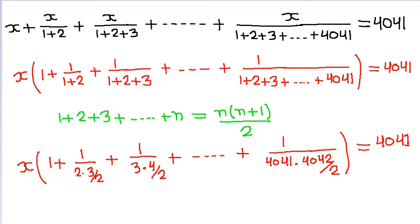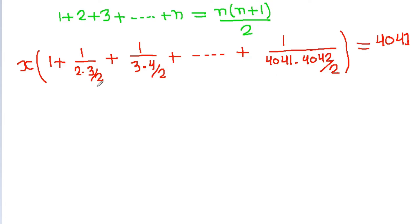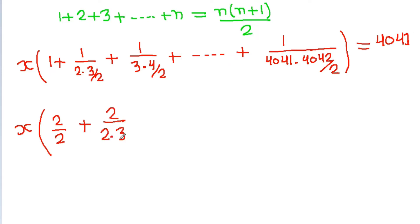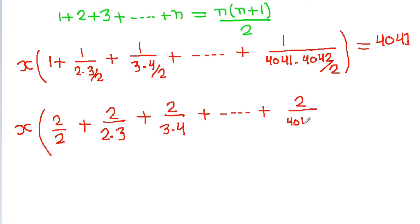Now we can write this as x times: 1 written as 2 by 2, plus 2 by (2 into 3), plus 2 by (3 into 4), up to 2 by (4041 into 4042).